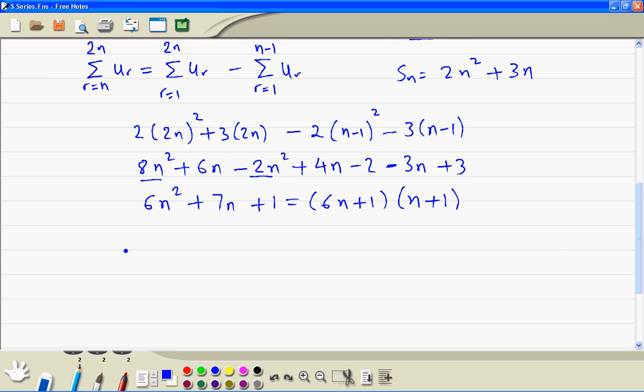So therefore, the sum, r start from n up to 2n, is equal to 6n plus 1, times n plus 1.